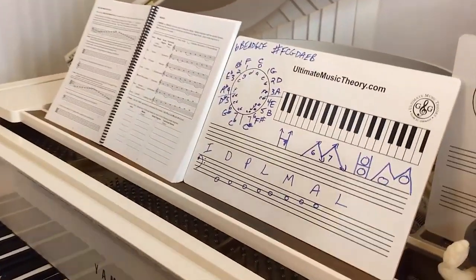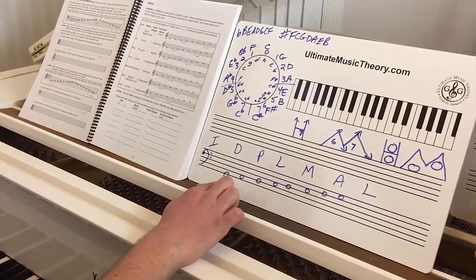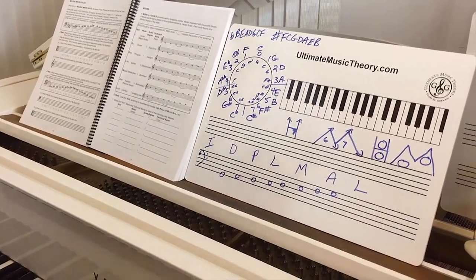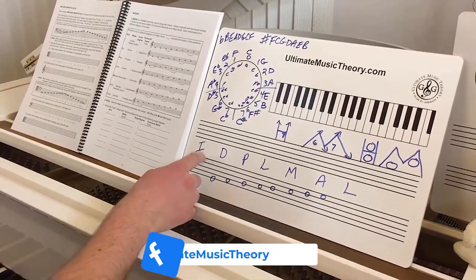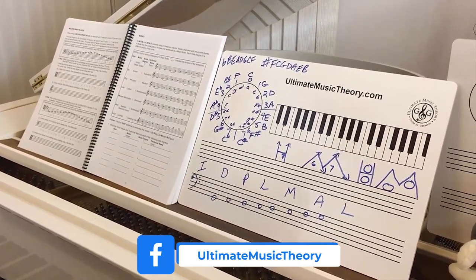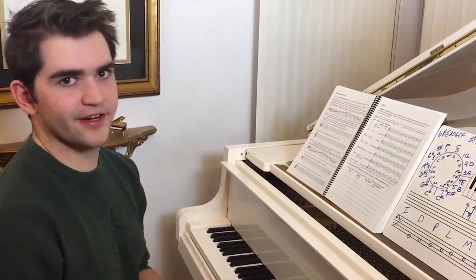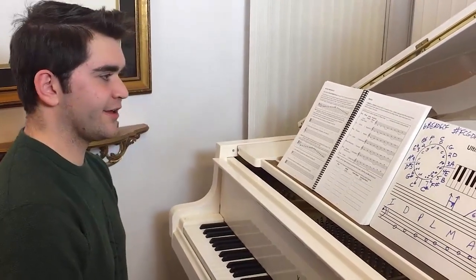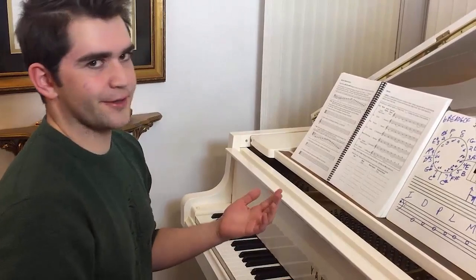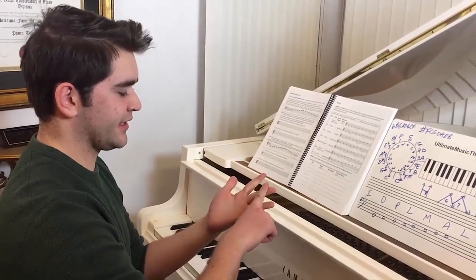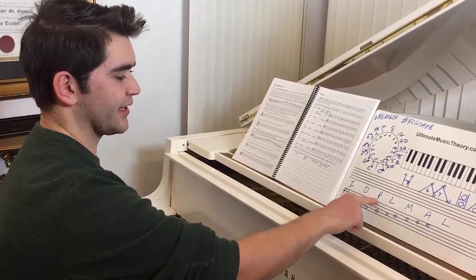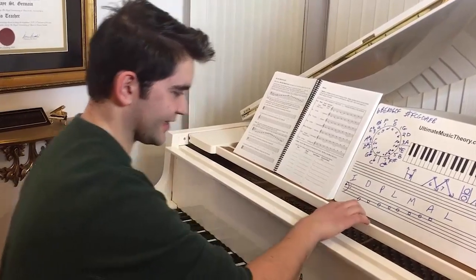Judging by the first note, we can determine it's a G, so the scale starts on G. We look at the key signature — no sharps or flats. A mode is a major scale played on a certain degree. A major scale with no sharps or flats would be C major. So let's count backwards from G: G, F, E, D, C — one, two, three, four, five. 'I do play like Mozart' — so this is a Mixolydian scale.